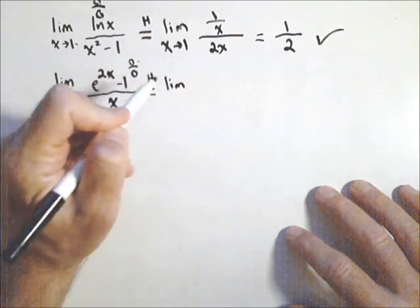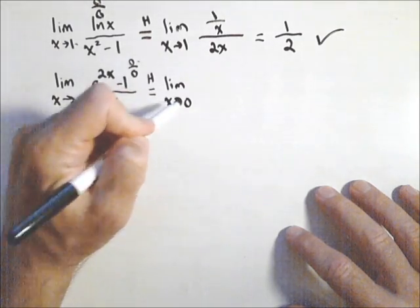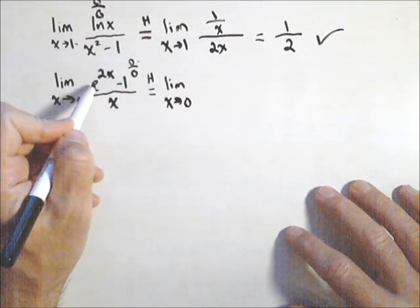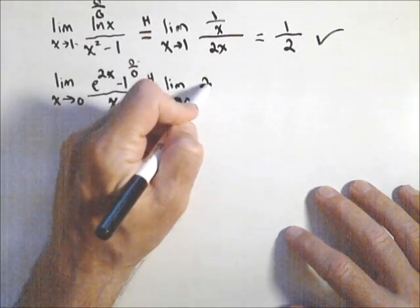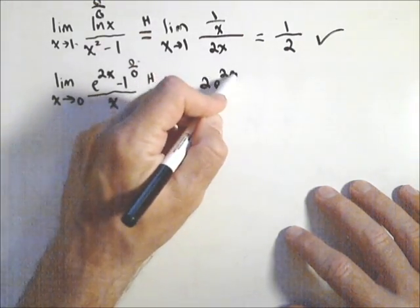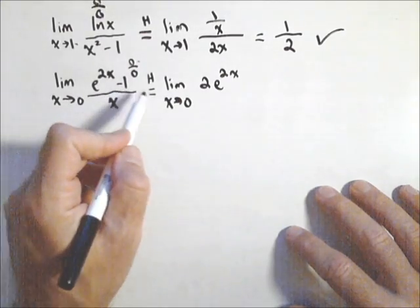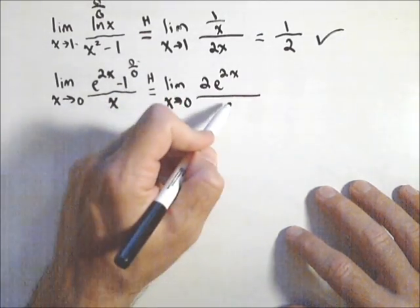And then I'm going to recalculate the limit as x goes to zero. Derivative of e to the two x using chain rule is e to the two x times two. So two e to the two x minus one, which is zero, all over one.